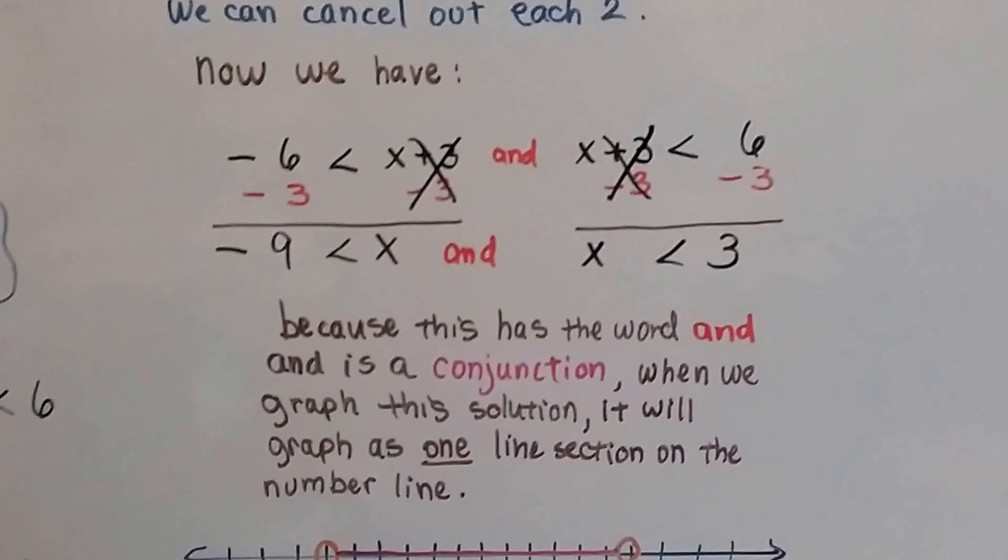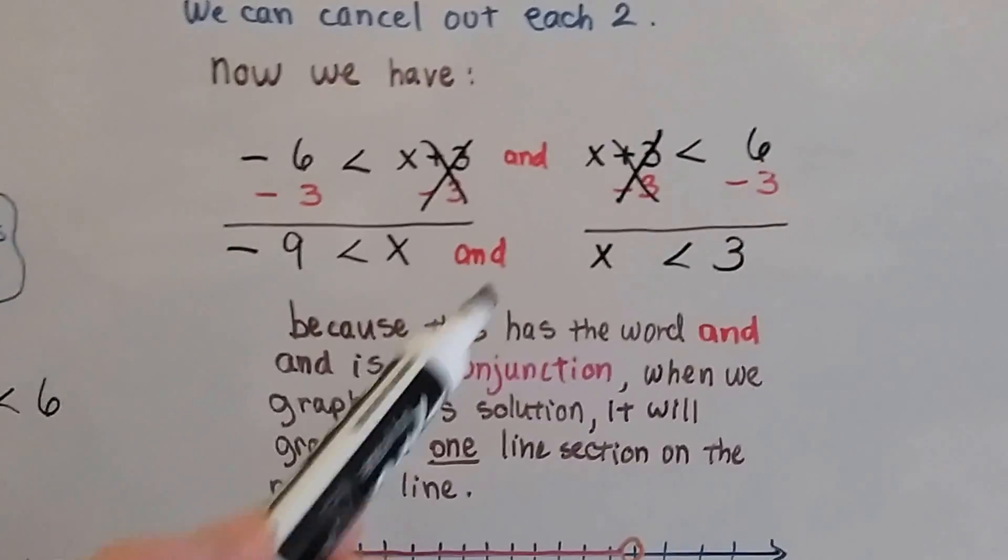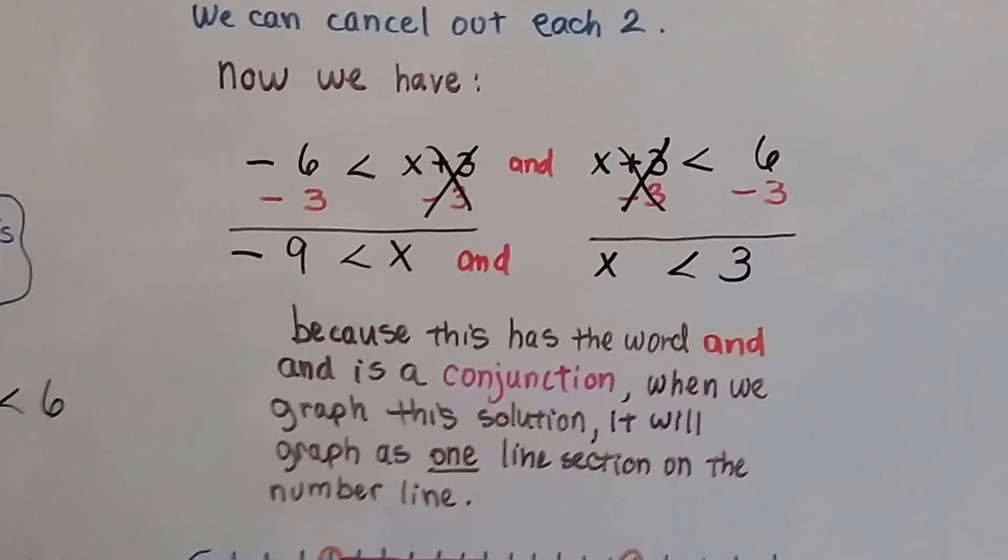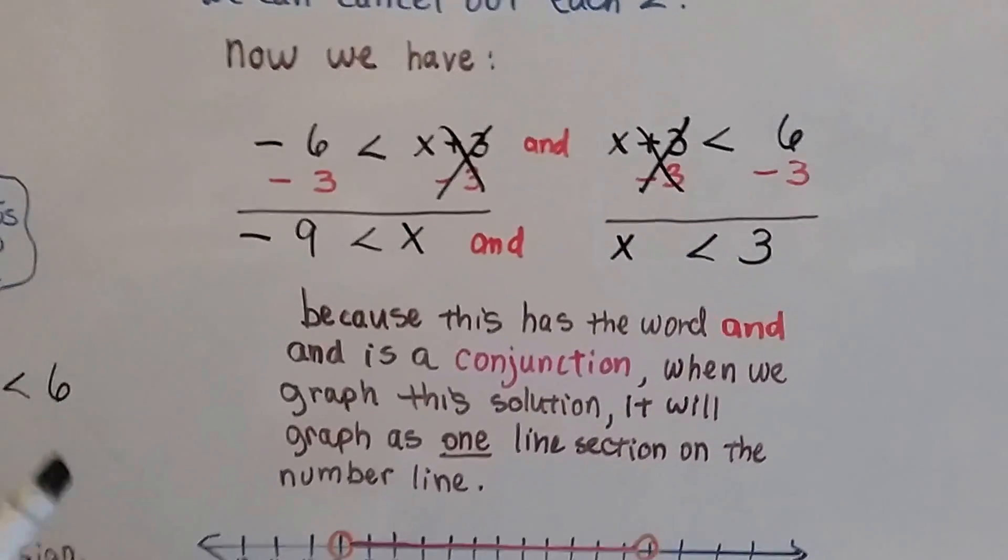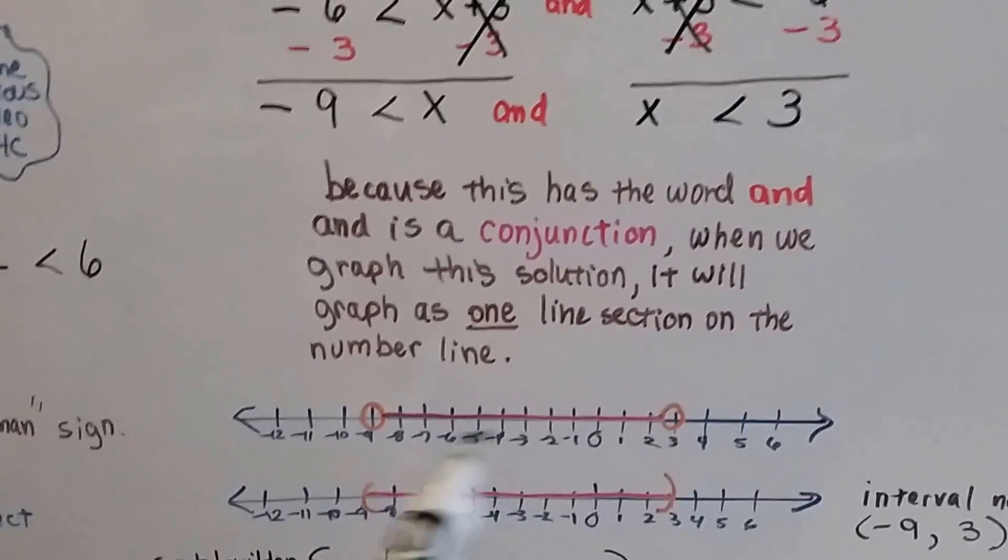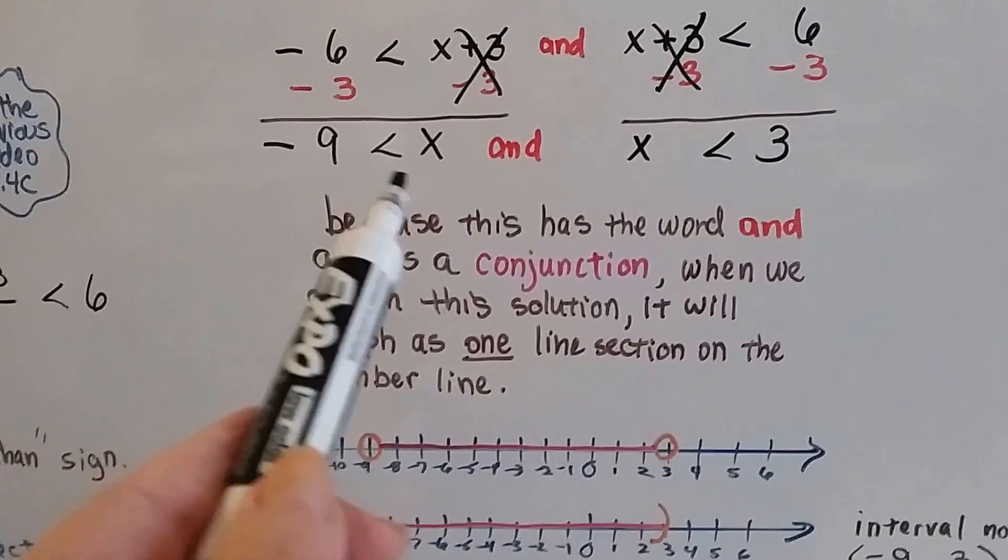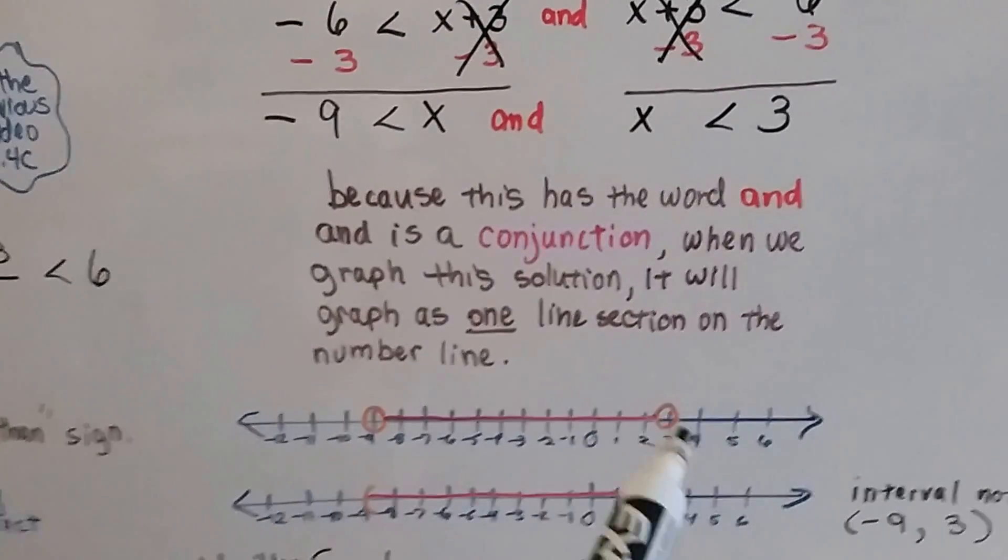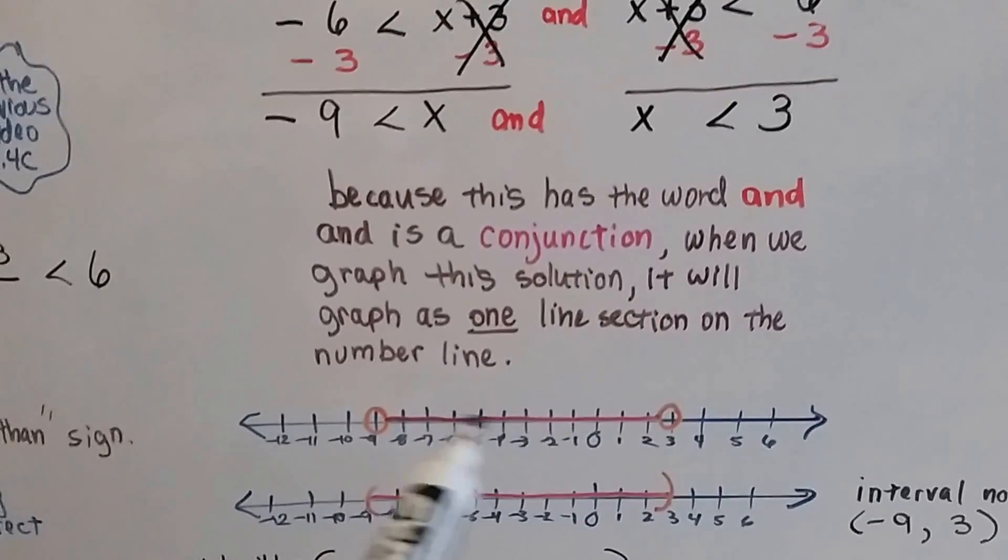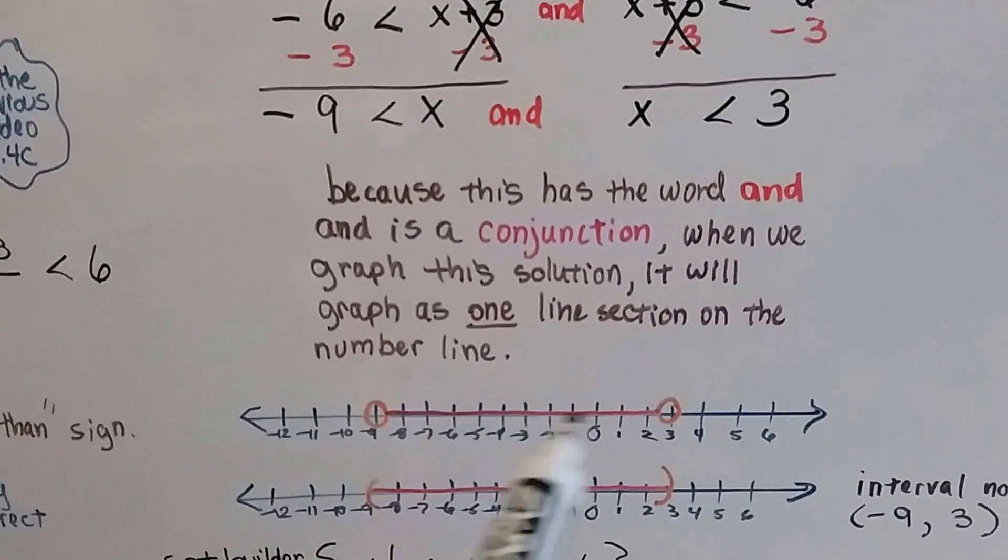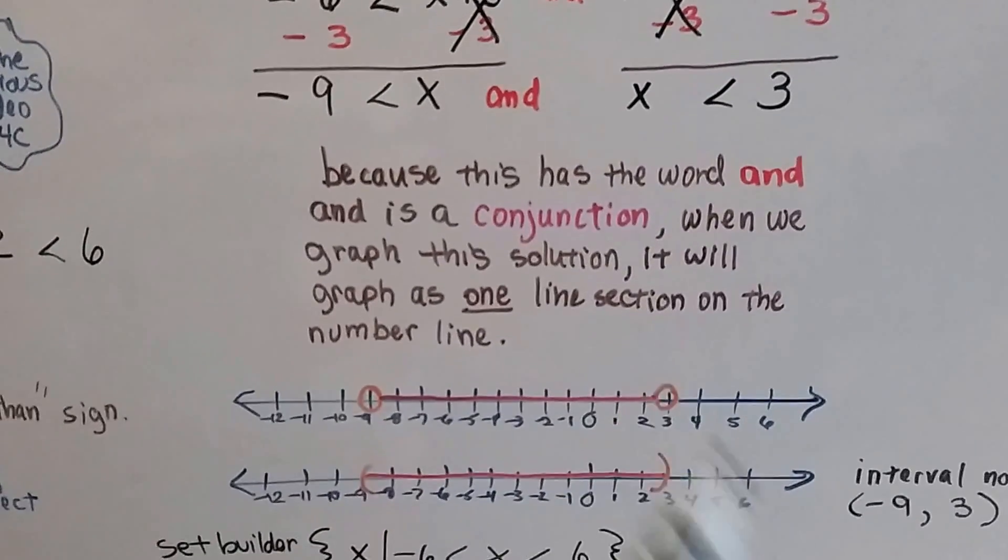Now we can graph this. Because this has the word and, and it's a conjunction, when we graph the solution, it's going to graph as one line section on the number line. We learned that in the last video. And because they're not or equal to, then they're not included. So we're going to have an open circle on the negative 9 and an open circle on the 3 with our graphed line showing all the correct values in the solution set.